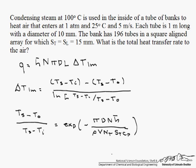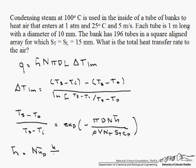Our plan is to find our h-bar, from that we can find our T outlet, from that we can find our delta T log mean, and finally we can solve for our Q. Our h-bar is the Nusselt number times the thermal conductivity k of the fluid divided by the diameter.